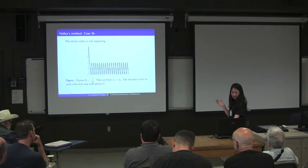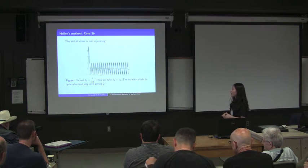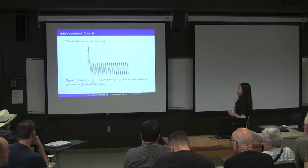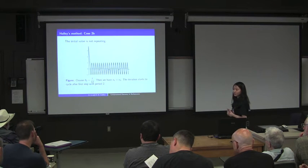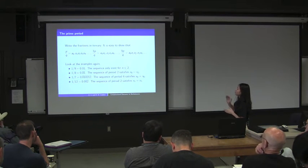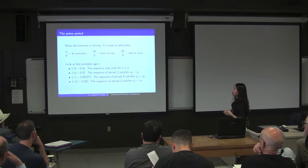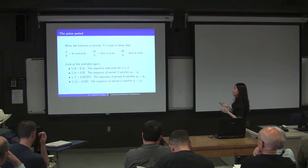For another example with θ₀ equal to π over 12, we find x₁ equals x₃, so the iteration starts to cycle after the first step with period 2. To determine the period length from the initial angle, we can write the fraction in ternary (base 3). Multiplying by 3 shifts the decimal one place to the right — like a shift map. Since cotangent is unaffected by integer multiples of π, only the fractional part matters.